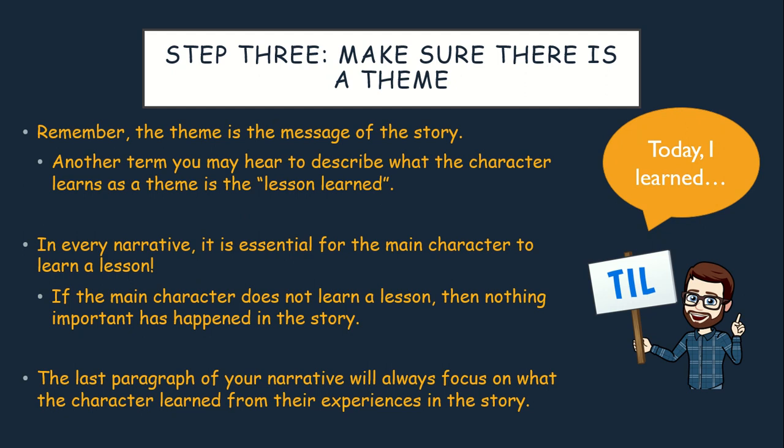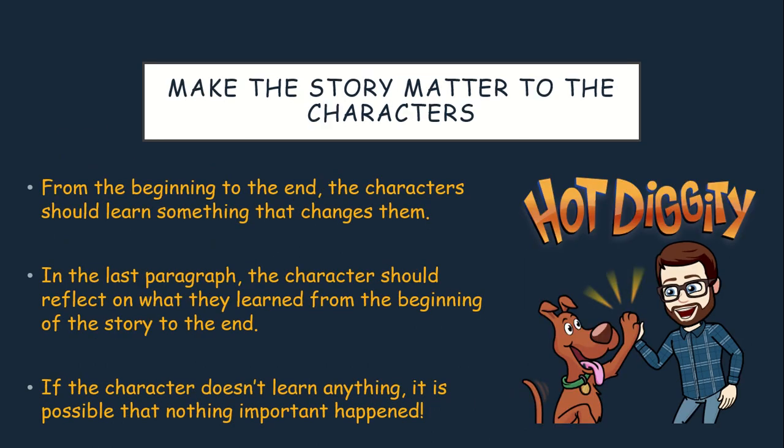The third step is to make sure there is a theme. Remember, the theme is the message of your story. Another term you may hear me say to describe what the character learns is the lesson learned. In every narrative, it is essential for the main character to learn a lesson. If the main character does not learn a lesson, then nothing important has happened in the story. The last paragraph of your narrative will always focus on what the character learned from their experiences. From the beginning to the end, the character should learn something that changes them, and in the last paragraph, the character should reflect on what they learned.